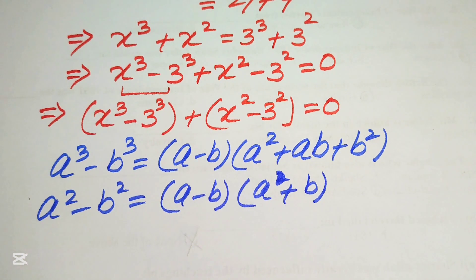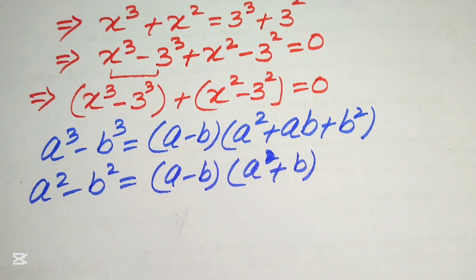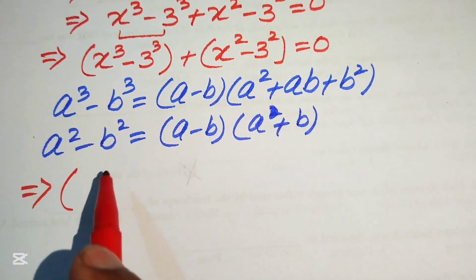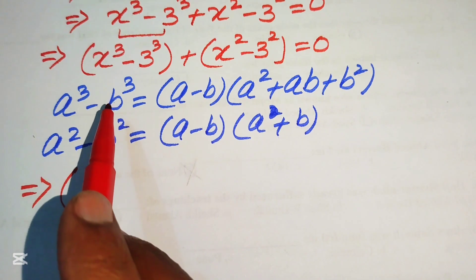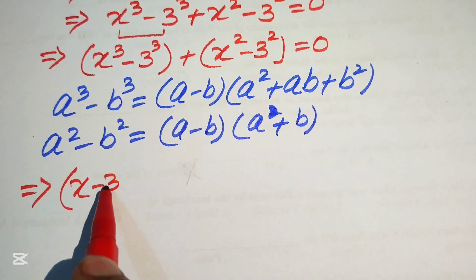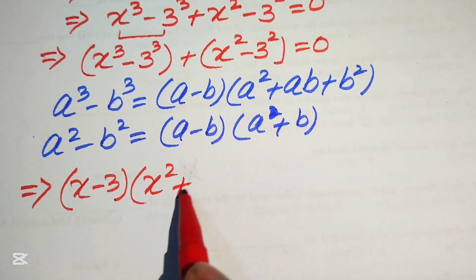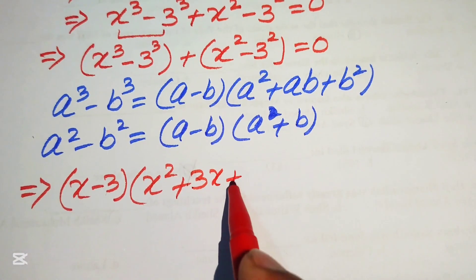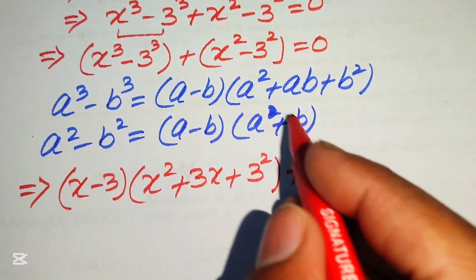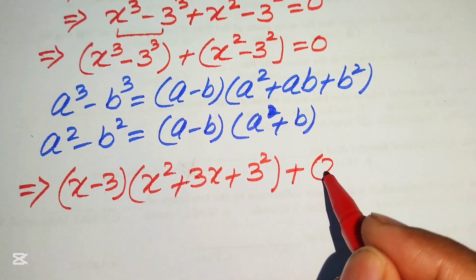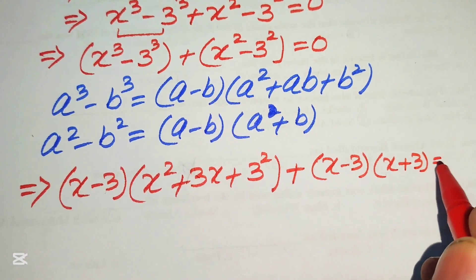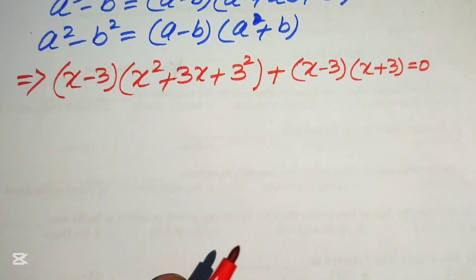Applying the cubic formula to the first group gives x minus 3 times x squared plus 3x plus 3 squared. Applying the square formula to the second group gives x minus 3 times x plus 3. The full equation is now x minus 3 times x squared plus 3x plus 9, plus x minus 3 times x plus 3, equals 0.